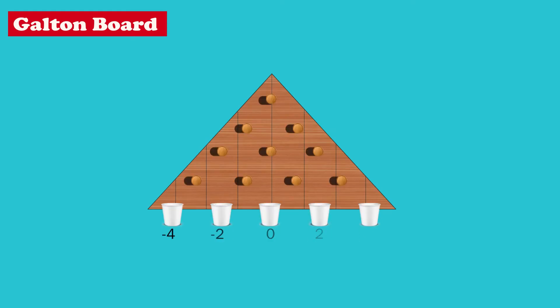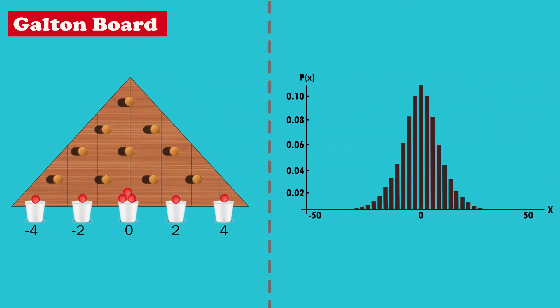To model the classical case, we might use a Galton board, dropping a ball that bounces off multiple rows of pins and produces a standard Gaussian distribution.